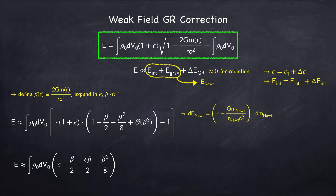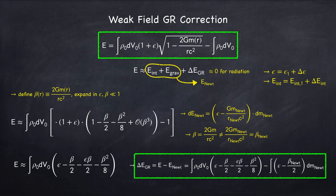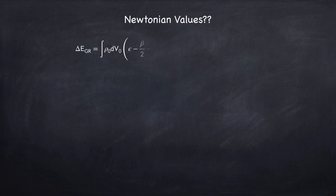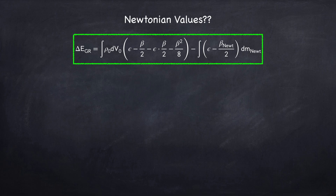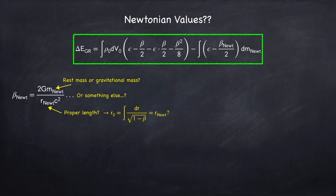Let's first write the Newtonian energy in terms of a Newtonian mass and a Newtonian distance. The metric deviation β may not equal the Newtonian β. We define the GR correction as the difference between the energy we just found and the Newtonian energy expressed in Newtonian quantities. So we have to figure out what the Newtonian values are — essentially, what is β_Newtonian? The problem is there's an ambiguity: does the Newtonian mass correspond to the rest mass or the gravitational mass? In Newtonian theory there is no distinction between the two. And what about the radial position — is that proper length, coordinate length, or something else altogether?